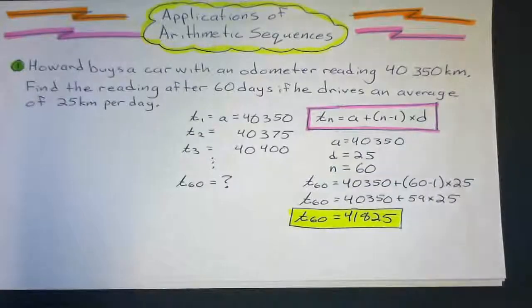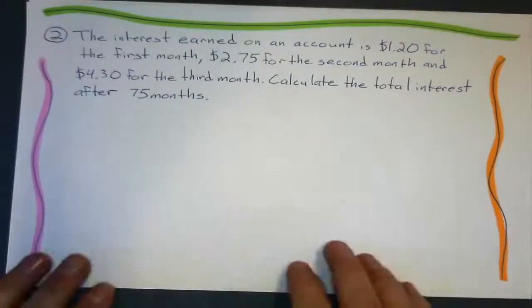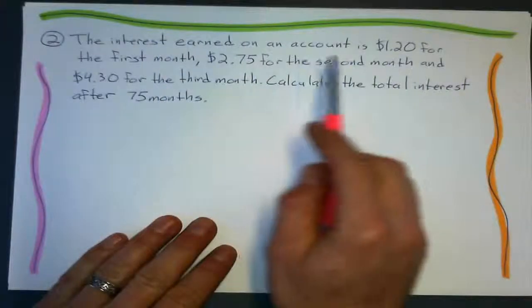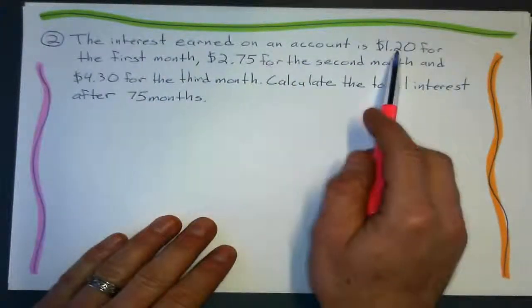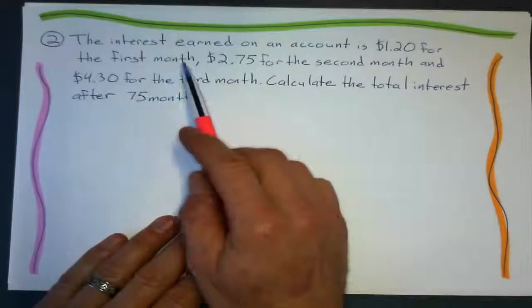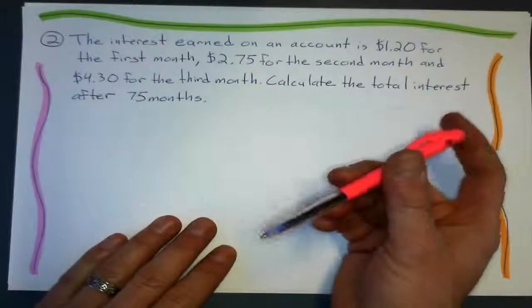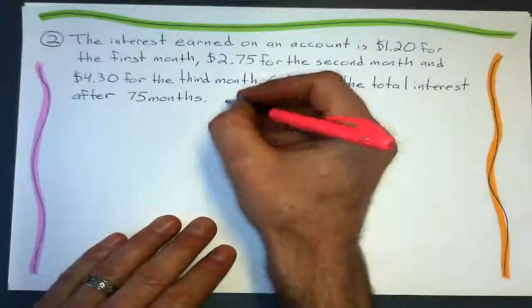So, this problem. First up, we go, okay, is it an arithmetic sequence? $1.20 the first month, $2.75 the second month, $4.30 the third month. Does it have a common difference?